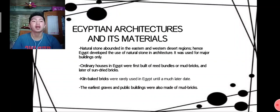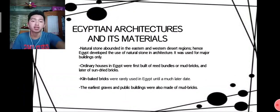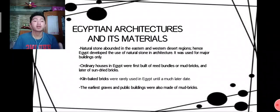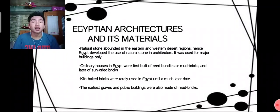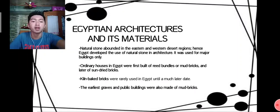Kiln-baked bricks were rarely used in Egypt until a much later date. The earliest graves and public buildings were also made of mud bricks. Ordinary Egyptian houses used mud bricks or sand-dried bricks, while kiln-baked bricks were not commonly used during the Egyptian period.